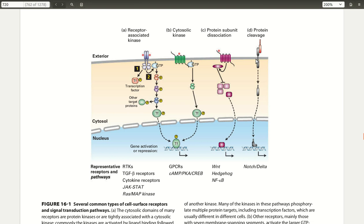So examples of this first part, receptor-associated kinase, would be TGF-beta receptors, cytokine receptors, RAS and MAP kinase. Examples of cytosolic kinases would be G protein-coupled receptors, cAMP, PKA, CREB. And for the protein subunit dissociation, an example is Hedgehog, and then Notch-Delta for the protein cleavage.